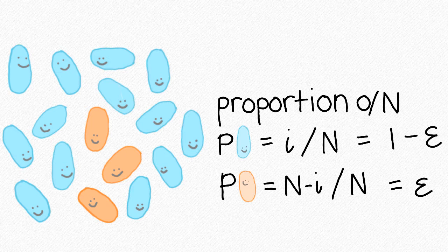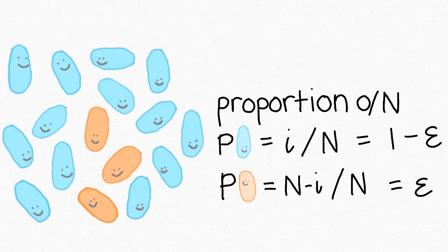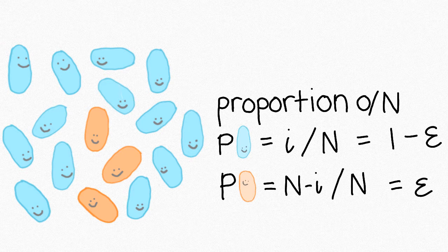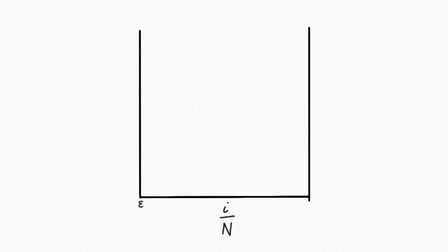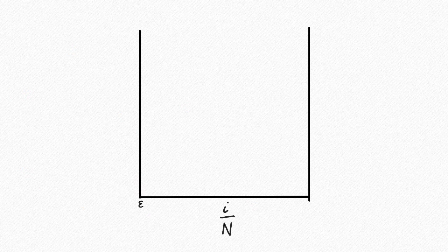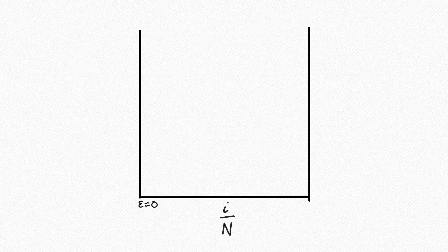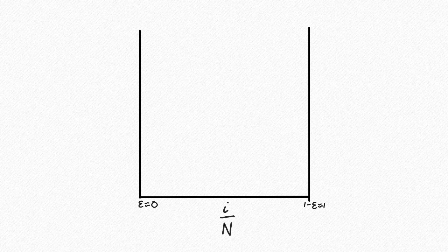Will orange playing with those fitnesses in this current population state reach fixation and take over the entire petri dish? Well, we can find that out by drawing a graph with the fraction of population playing blue on the x-axis. ε is on the left, basically when i is close to 0, and 1 minus ε is on the right, approximately equal to 1, where blue would be the founder allele.